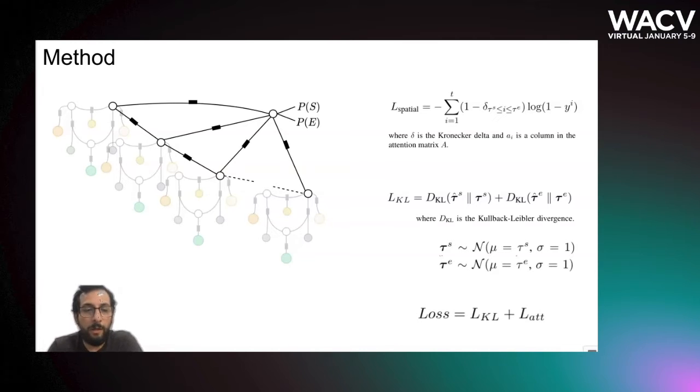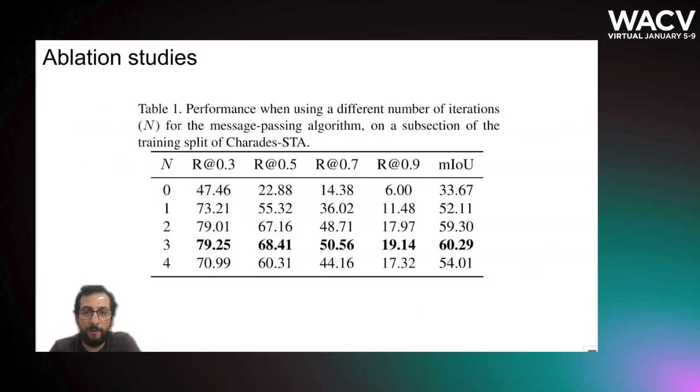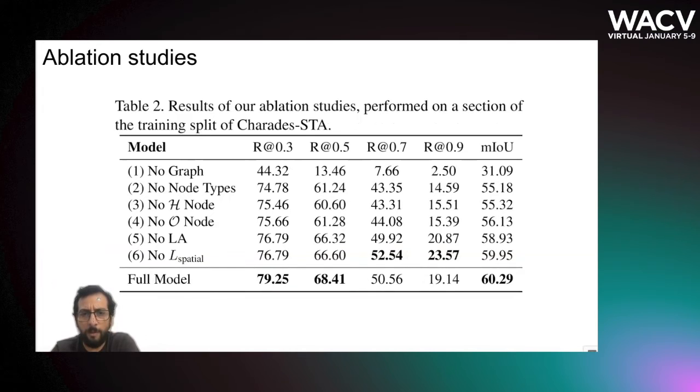We did some evaluation study. The first evaluation study that we do for our method is we want to know how many iterations we have to do for the message passing algorithm and we found that n equals 3 is getting the best performance. Using n equals 3, then we evaluate all the components of our method to look how they improve or how they affect the performance of our full model.